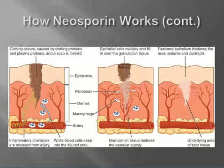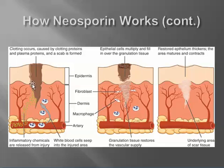Once the skin is wounded, white blood cells surround the wound and begin to fight the infection, as the skin gradually repairs itself. Neosporin aids the white blood cells in finding the infection, while the body repairs the damaged tissue. As you can see, this is the cut right here, and all the white blood cells rushing to the site to stop all the infection from spreading to other areas of the body.